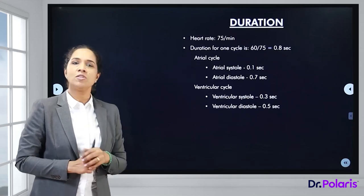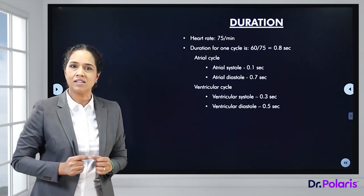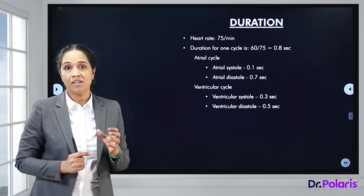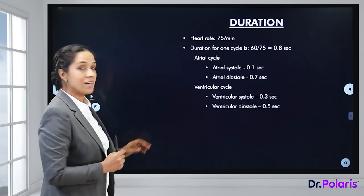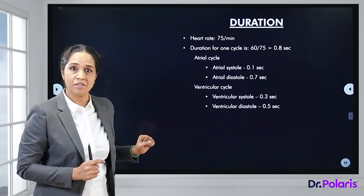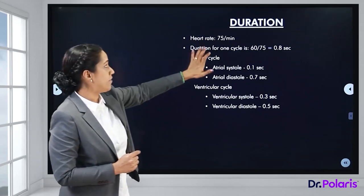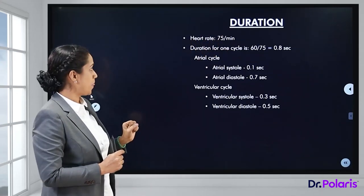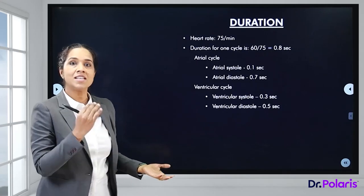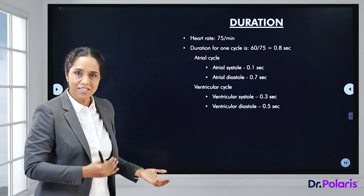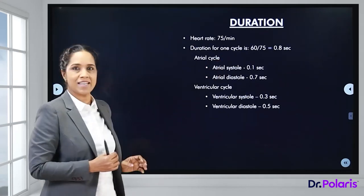The duration of a cardiac cycle is 0.8 seconds. This is derived from the heart rate: at 75 beats per minute, the duration becomes 60 divided by 75, which gives 0.8 seconds.